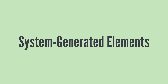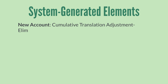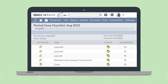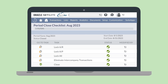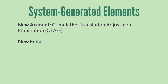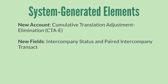After enabling this feature, NetSuite automatically adds some things to your account. For example, your account will now have the Cumulative Translation Adjustment Elimination account. In addition, when you close periods, you'll notice the addition of the Eliminate Intercompany Transactions task in the task list on the period Closed Checklist. Some of the fields that are added to your account include the Intercompany Status and Paired Intercompany Transactions fields on Sales Orders, Purchase Orders, Return Authorizations, and Vendor Return Authorization records.